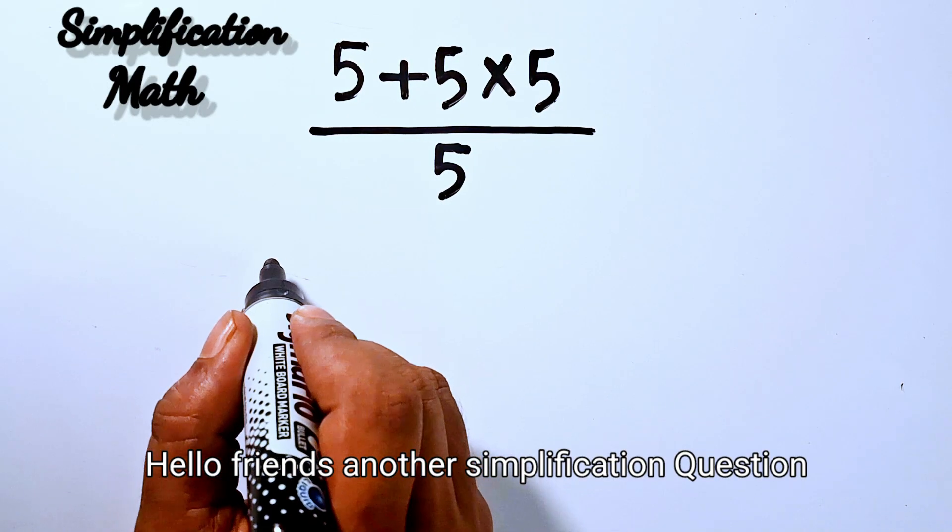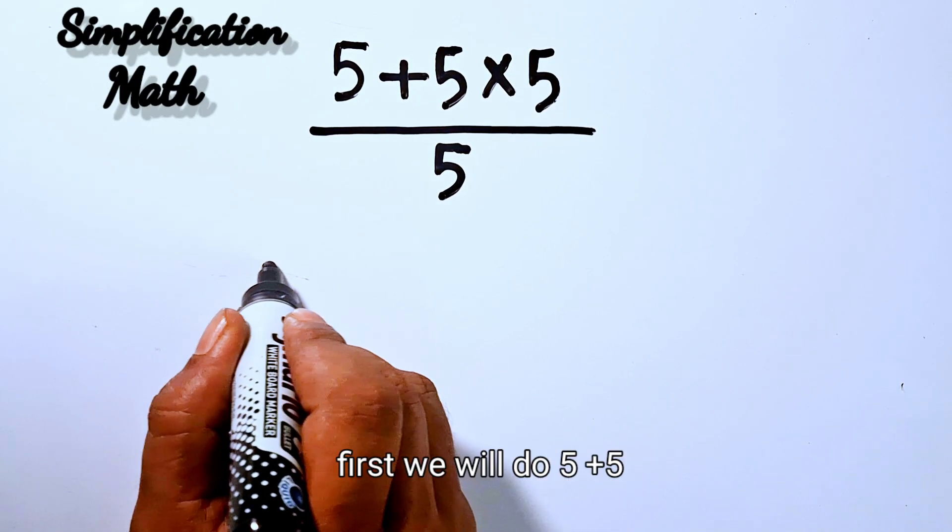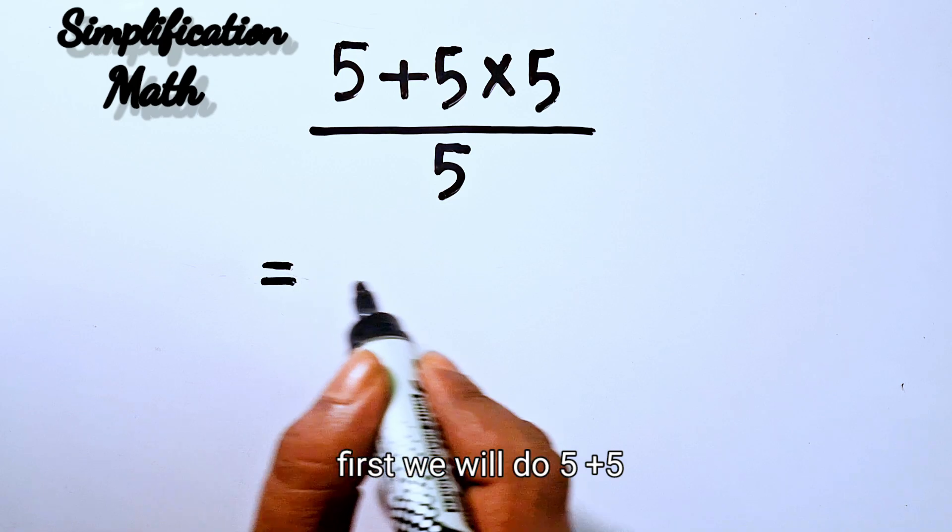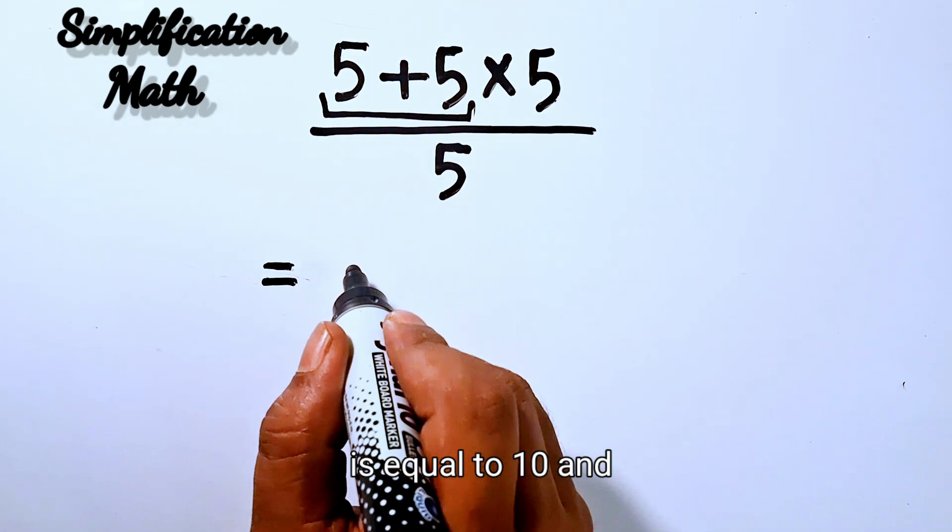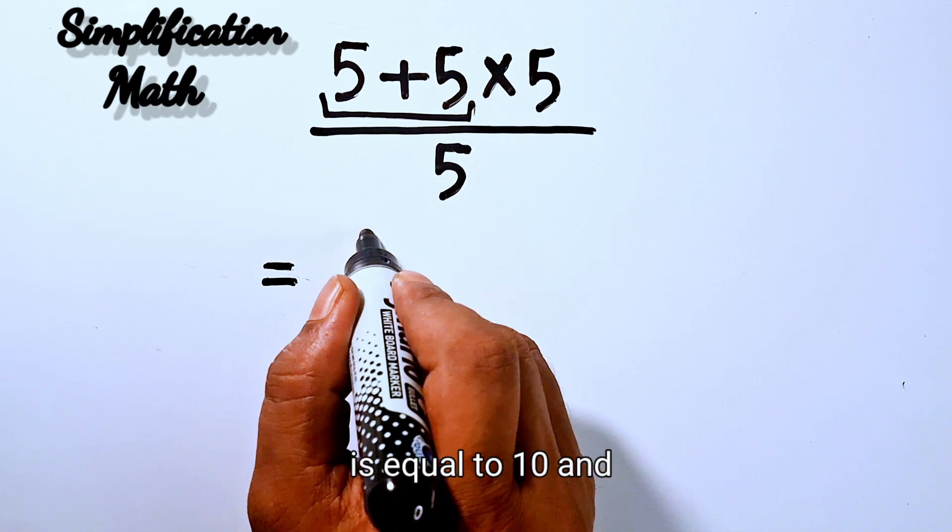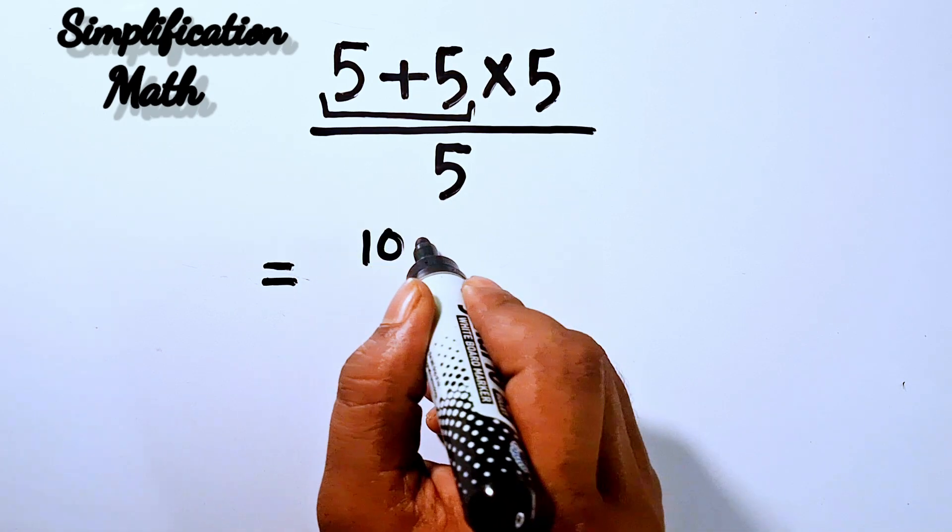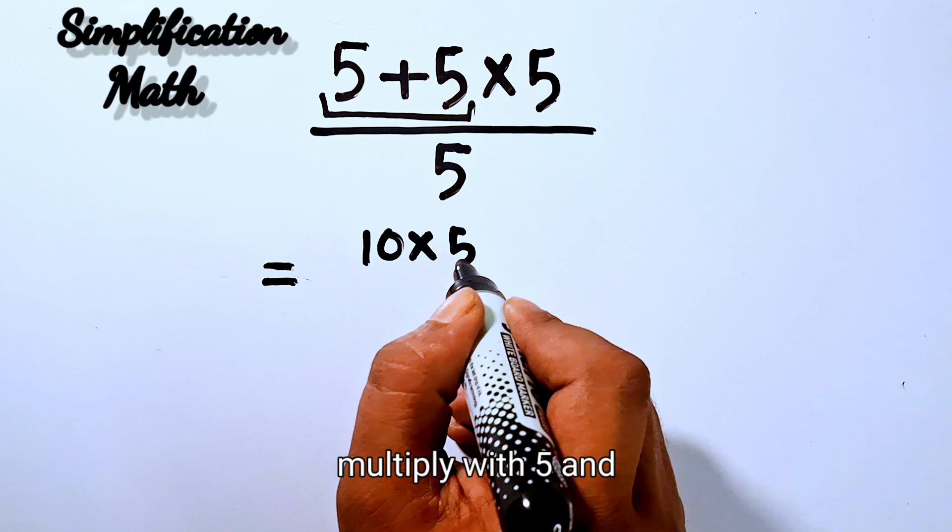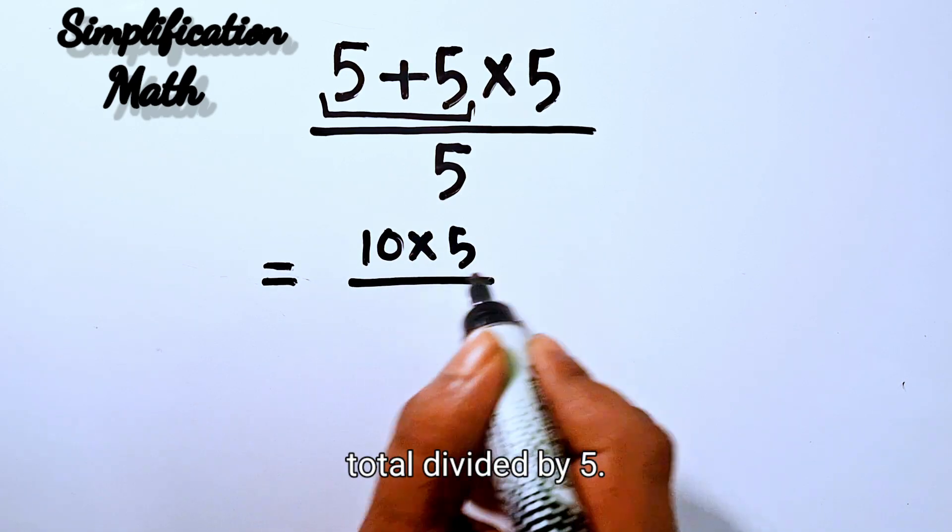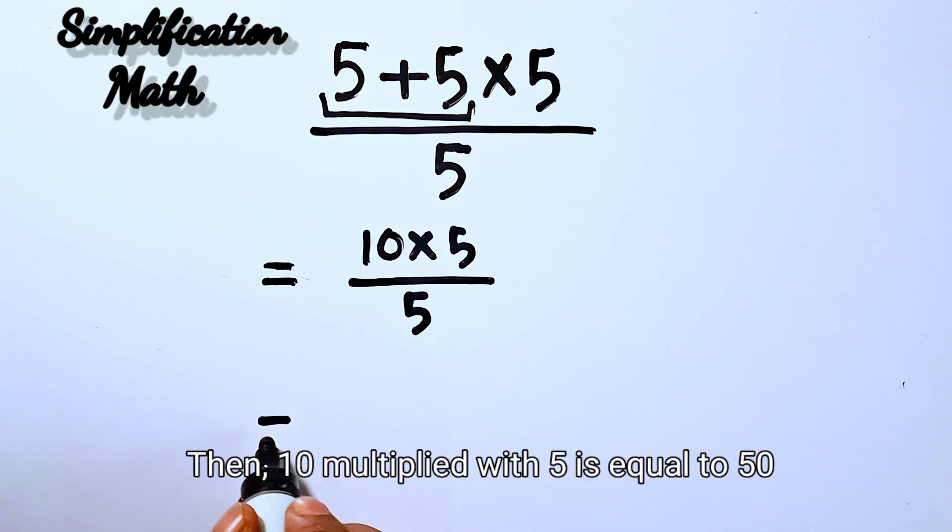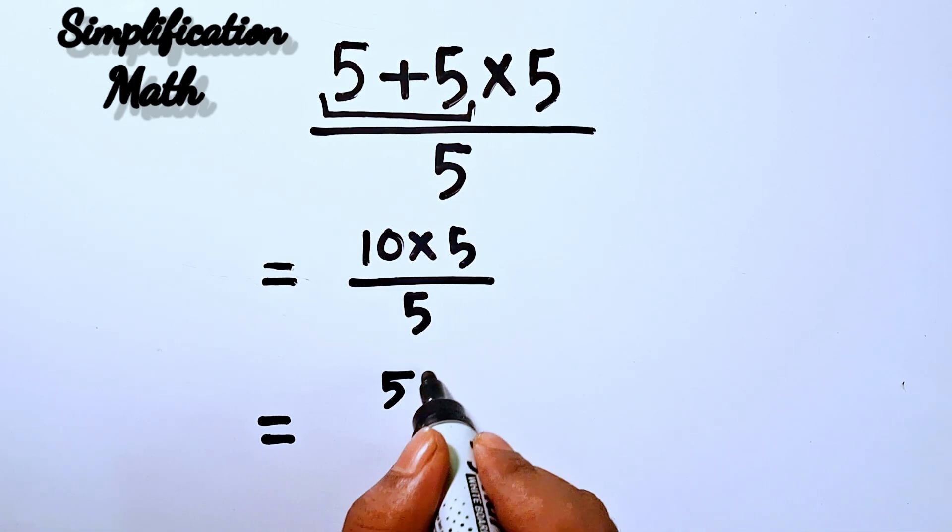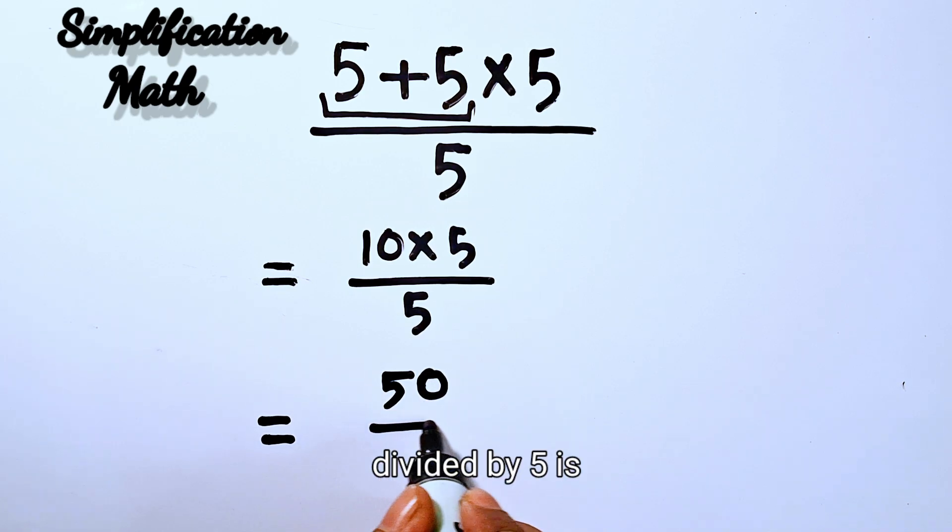Hello friends, another simplification problem. First we'll do 5 plus 5 equals 10, multiply with 5, total divided by 5. Then 10 multiply with 5 equals 50, divided by 5 equals 10.